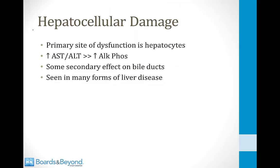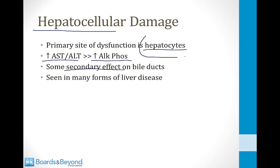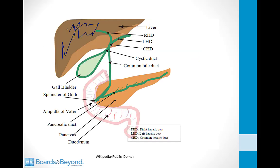Contrast that with the hepatocellular pattern of liver damage, which occurs when the primary site of dysfunction is with the hepatocytes in the liver. In this case, you will see a rise in AST and ALT levels in the serum that is much greater than the rise in alkaline phosphatase. The rise in alkaline phosphatase occurs because there is some secondary effect on the bile ducts, but the primary problem lies with the liver cells. To understand this, imagine a pathologic process damaging the liver — AST and ALT levels will rise significantly. Since there are bile ducts inside the liver, there will be some secondary effect on bile duct epithelial cells, so you see some rise in alkaline phosphatase — but relatively small compared to the larger rise in AST and ALT.